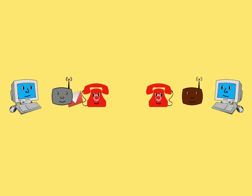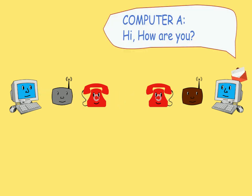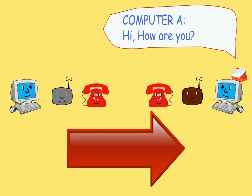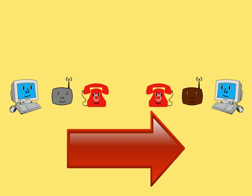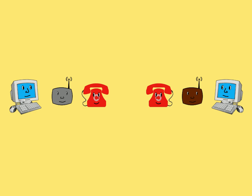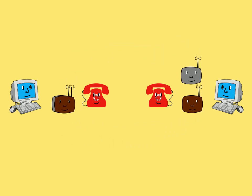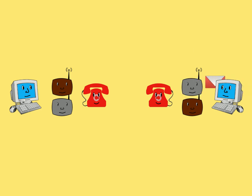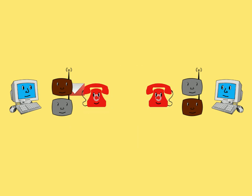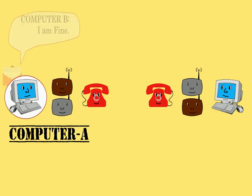Now the message can be successfully sent from computer A to computer B. But it's just one-way communication — we cannot get a reply. In order to get a reply, we have to set up the whole setup from B to A: a modulator between computer B and telephone B, analog signals from telephone B to telephone A, and a demodulator between telephone A and computer A.